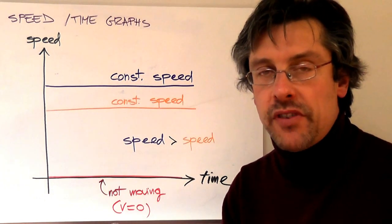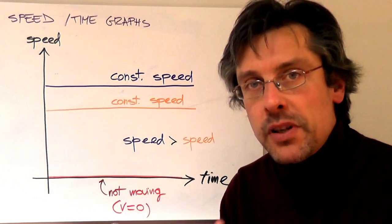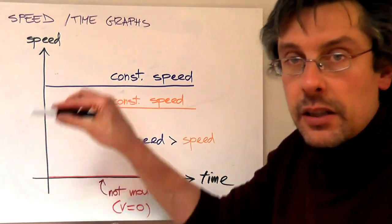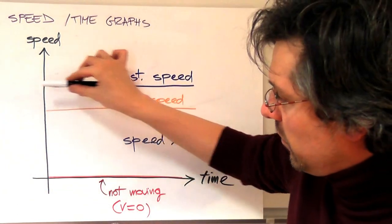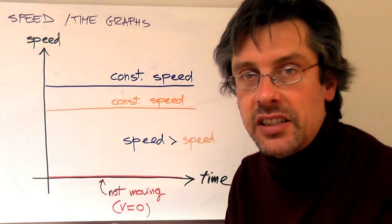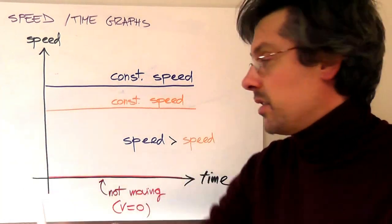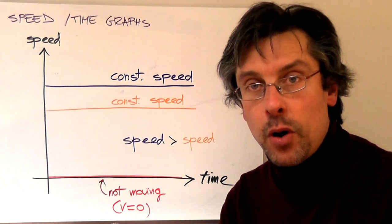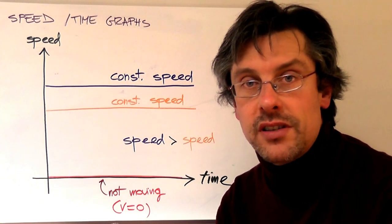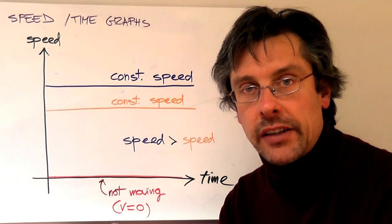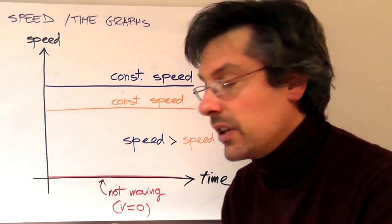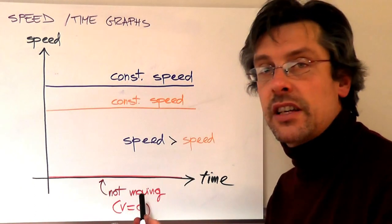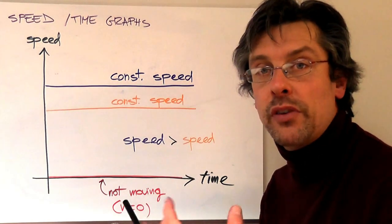If you remember when we investigated the distance-time graph, we started with the simplest kind of motion: an object which is not moving. In a distance-time graph that was represented by a flat line, and where that flat line was depended on the distance that object was. In a speed-time graph, on the other hand, we're representing a motion that has a constant speed of zero, and that means an object which is not moving has a speed-time graph given by a flat line along the x-axis.